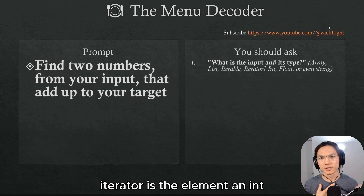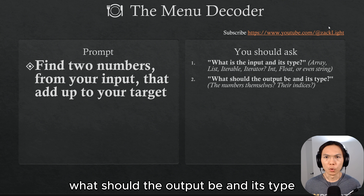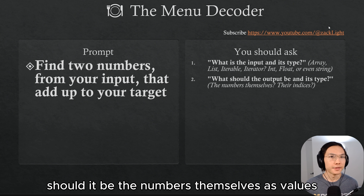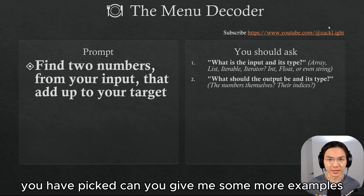Is the element an int, float, or even string? What should the output be and its type? Should it be the numbers themselves as values, or should you return the indices of the elements you have picked?